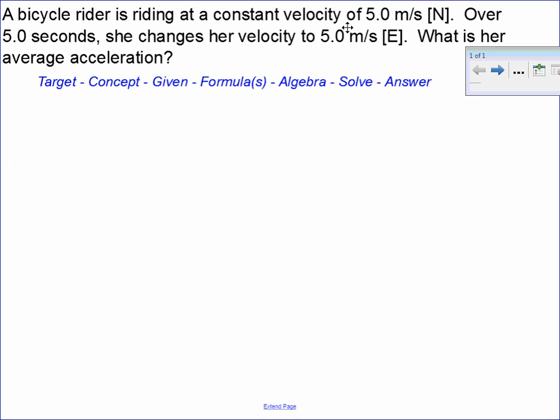I'm going to start this using the seven-step problem solving method. The target: we're being asked for an average acceleration. It's very important to remember to put that little arrow to remind us we're looking for a vector, so the answer will look like acceleration equals something meters per second squared with a direction on the end. There's our target.